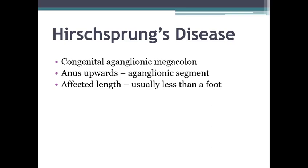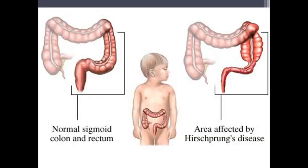Hirschsprung's disease is congenital aganglionic megacolon. From the anus upward, there is an aganglionic segment, and the affected length is usually less than a foot. In that part of the colon, there are no ganglion cells, so the colon cannot contract — it loses its peristaltic function. Food particles accumulate there, leading to a megacolon. The normal sigmoid colon and rectum are shown for comparison, while the affected area appears massively dilated.